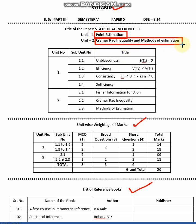One unit is related to point estimation and the other unit is related to Cramer-Rao inequality and methods of estimation. We know that a group of all statistical units under study regarding a certain characteristic is called a population, and the value which represents a population is called a parameter. The population parameter is always unknown.